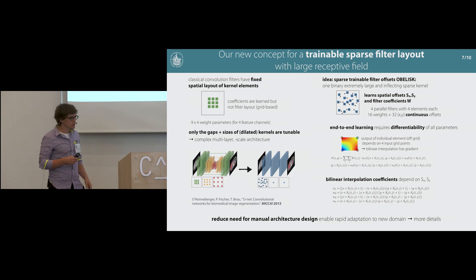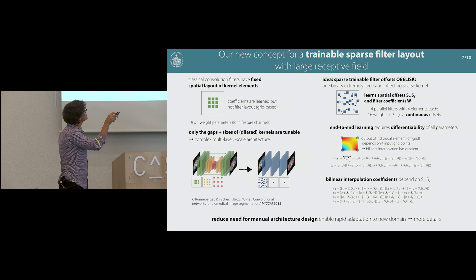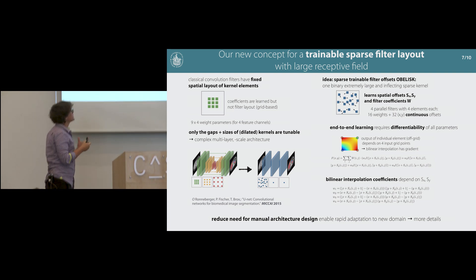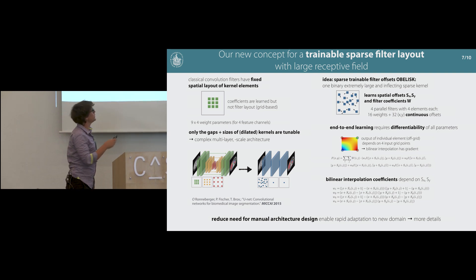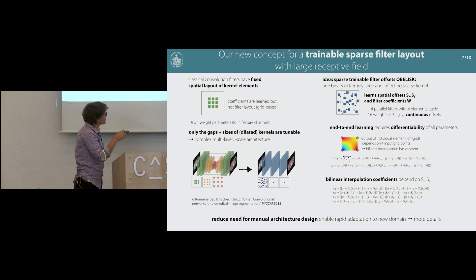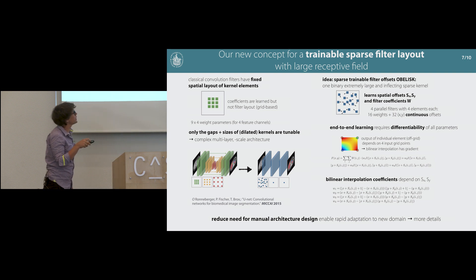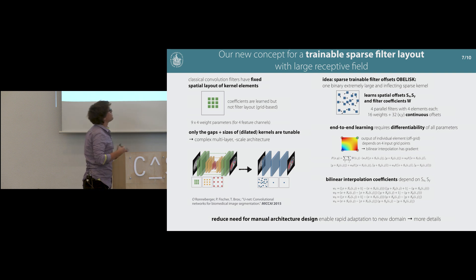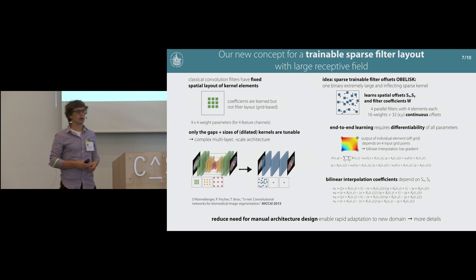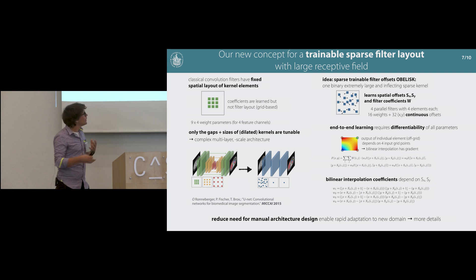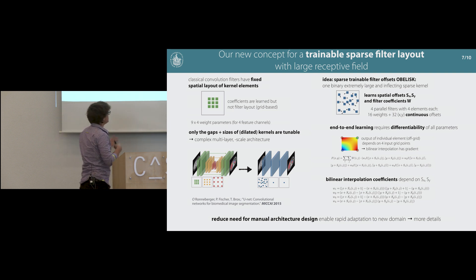Our concept is quite different: we want to not only learn the filter coefficients, but also their spatial offsets. We start by randomly initializing them. These spatial offsets may not lie on the image grid anymore, so to calculate the output we perform bilinear interpolation considering the four nearest grid points in 2D or eight in 3D. Because these interpolation coefficients depend on the spatial offsets, we can treat them as normal optimizable parameters, receive a gradient for backpropagation, and train the whole thing end to end, drastically reducing parameters while enabling adaptive, automatically learned architecture design.